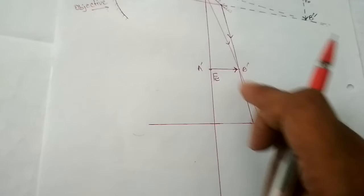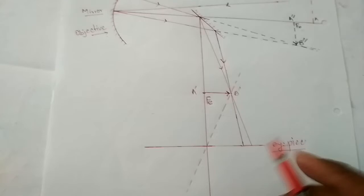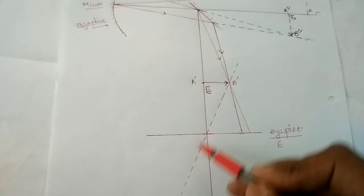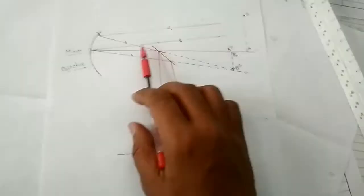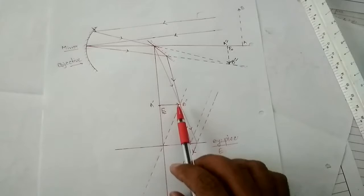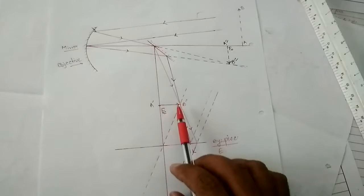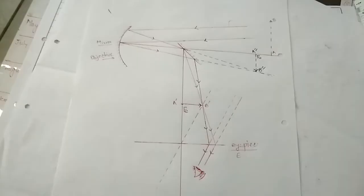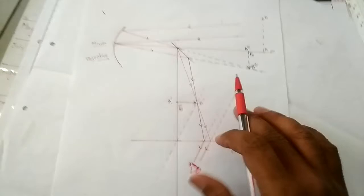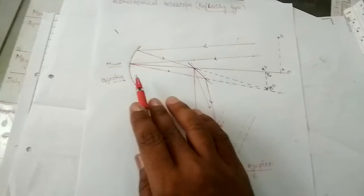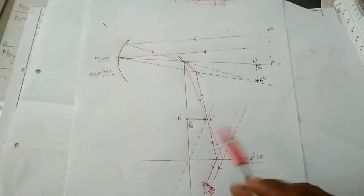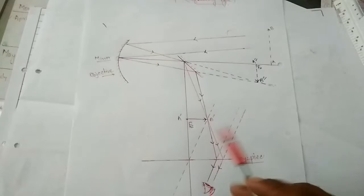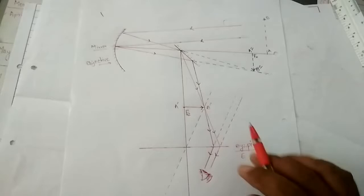Since the object (image a-dash b-dash) is at the focus of the eyepiece, the image will be formed at infinity. The ray passing through the optical center gives the direction of the parallel rays. The two rays become parallel after passing through the eyepiece. We see this magnified image at infinity from the side of the eyepiece. The observer at the bottom can receive the rays and see the magnified image of the celestial object.